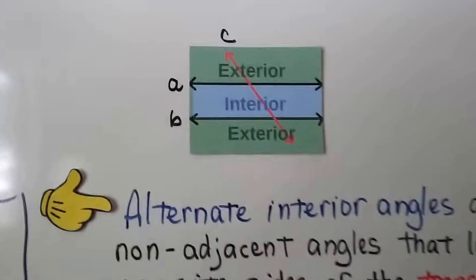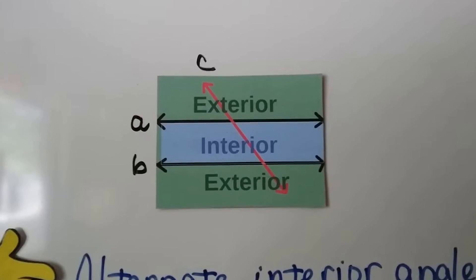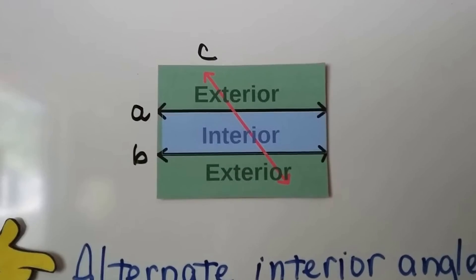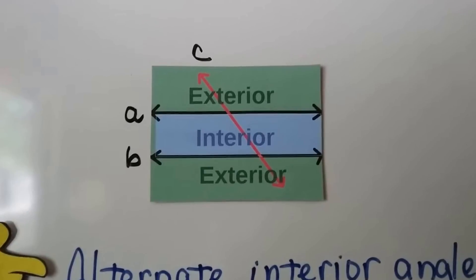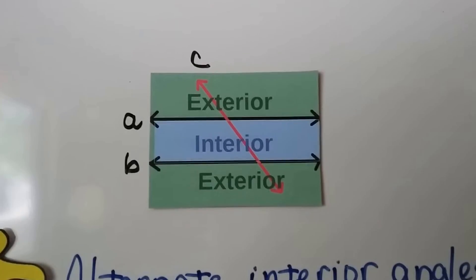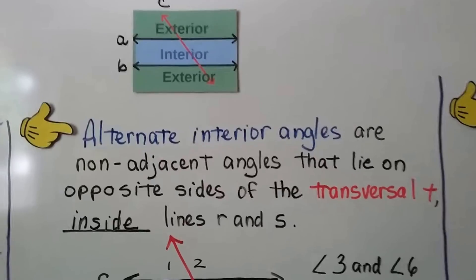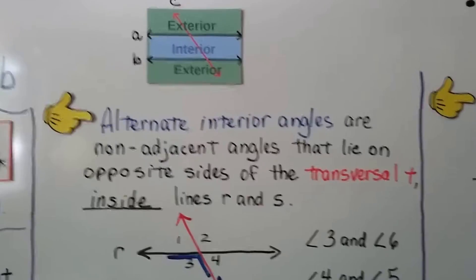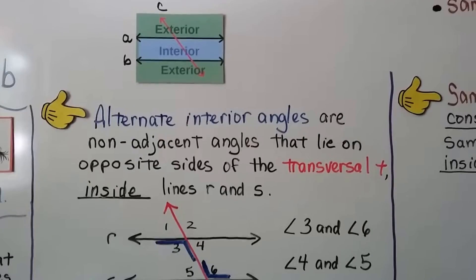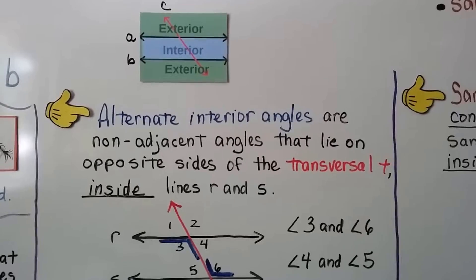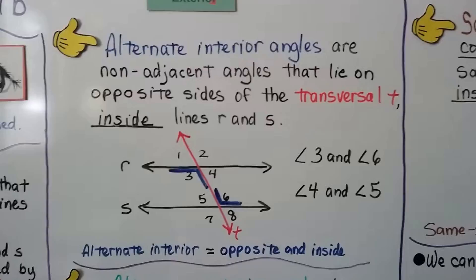Take a look at this card with lines A and B and transversal C. Everything between A and B is considered the interior — that's the blue region. Everything on the outside of A and on the outside of B is considered the exterior. Alternate interior angles are non-adjacent angles — meaning they're not next to each other — that lie on opposite sides of transversal T inside lines R and S. So alternate means opposite and inside.